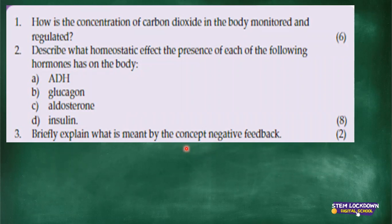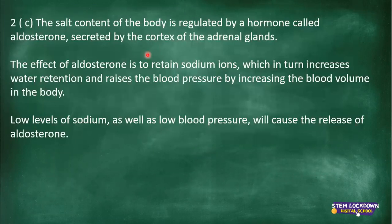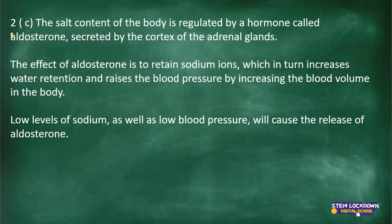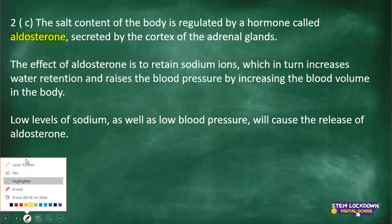The last hormone in question two is aldosterone. What is the homeostatic effect of aldosterone? We need to be very clear — we are dealing with homeostasis, so what is the homeostatic effect? The salt content of the body is regulated by aldosterone. It regulates the salt content in the body.